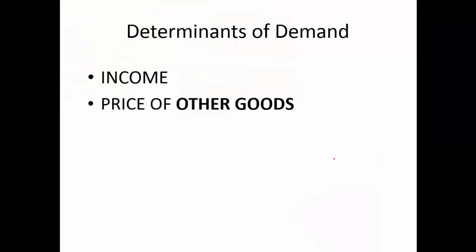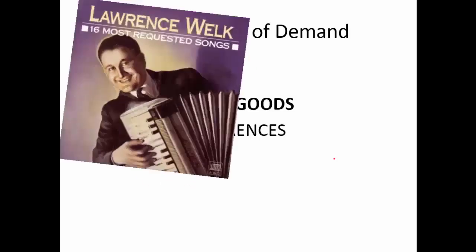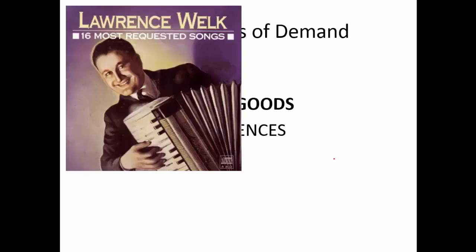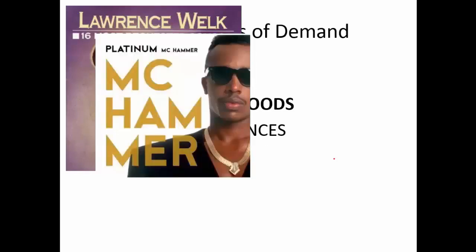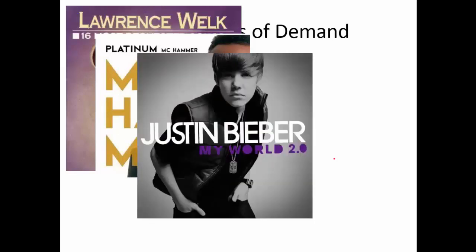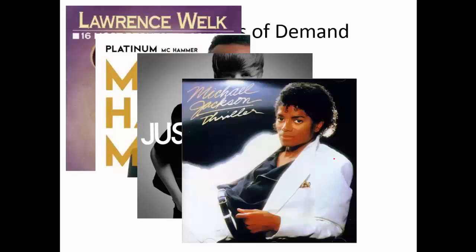So we've got income and the price of other goods — substitutes and complements. Next is tastes and preferences, which is really a catch-all category. We don't try to explain it much; that's a matter for psychology. We chalk up anything not covered by the other determinants to tastes and preferences. For example, musical tastes change over time — what my grandparents' generation listened to, what was popular when I was a kid, what's popular now. And sometimes a sudden event causes a surge in demand, as was observable with the untimely death of Michael Jackson.